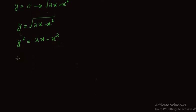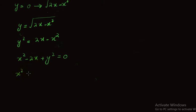We can rewrite this as x squared minus 2x plus y squared equals 0. By the completing the square method, the coefficient of x is minus 2, half of that is minus 1, and its square is 1. So to complete the square we add and subtract 1, giving x squared minus 2x plus 1 plus y squared minus 1 equals 0.